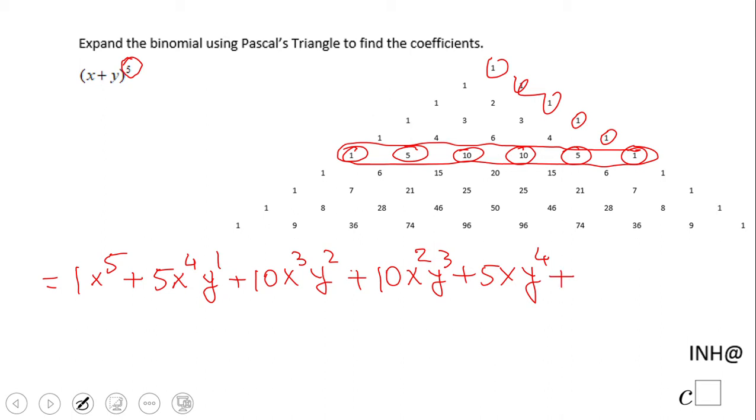So the simplified form will be x to the fifth power plus 5x to the fourth power y plus 10x cubed y squared plus 10x squared y cubed plus 5xy to the fourth power.